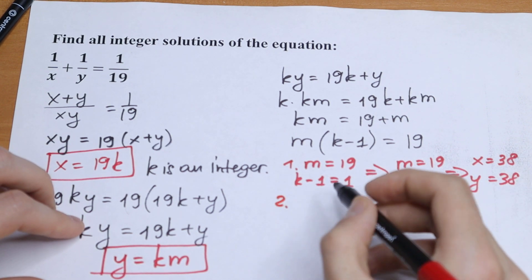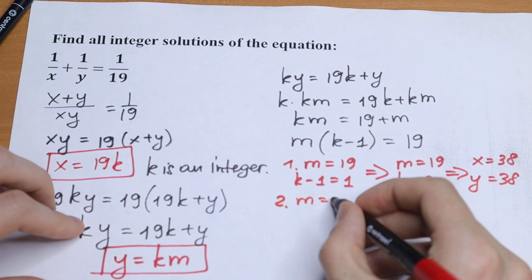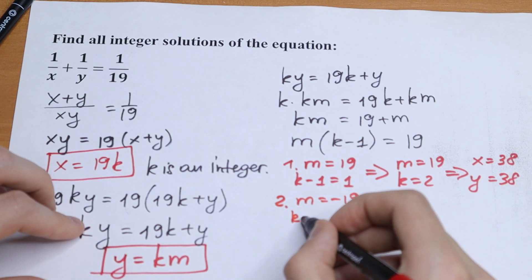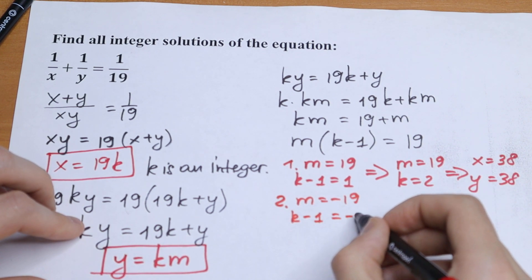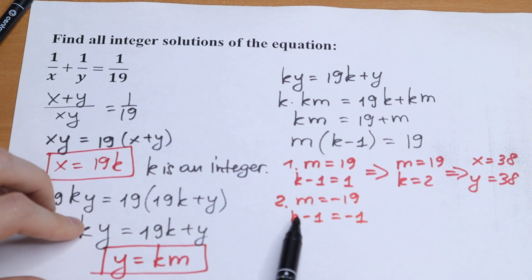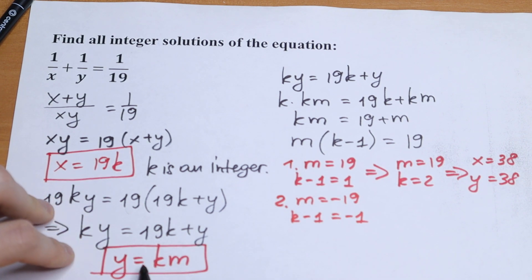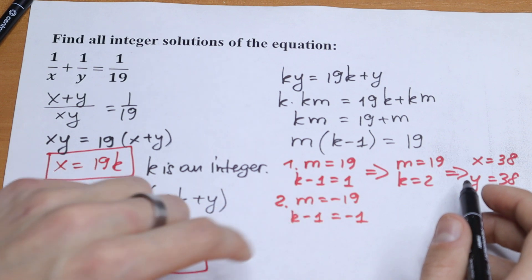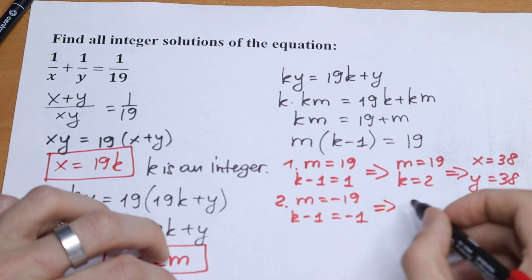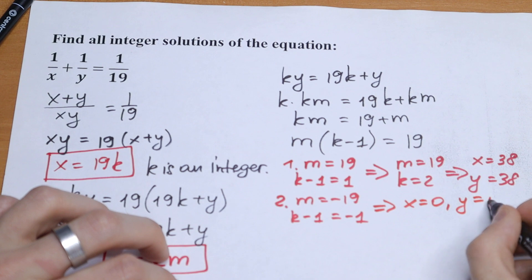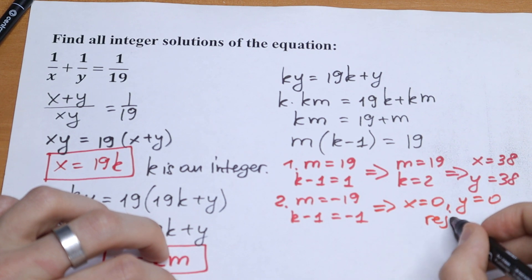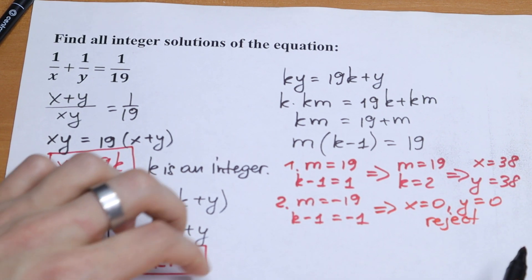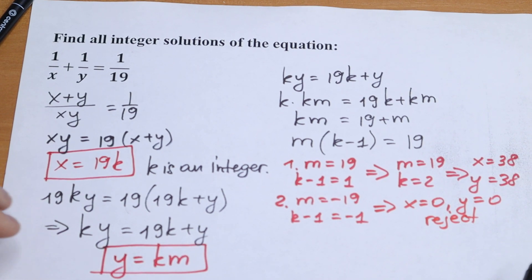The second case: m equal to minus 19 and k minus 1 equal to minus 1. But this gives k equal to 0, and k cannot be equal to 0, which would make x equal to 0. So we reject this case — our second case is not valid.